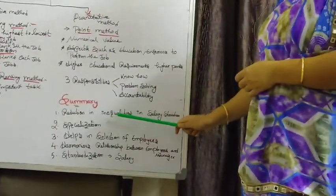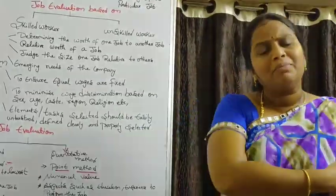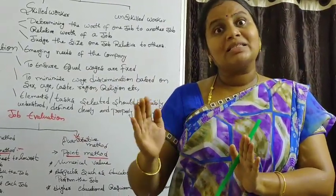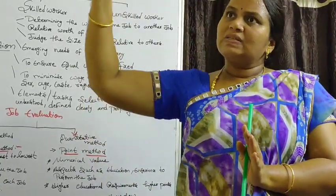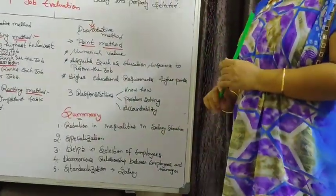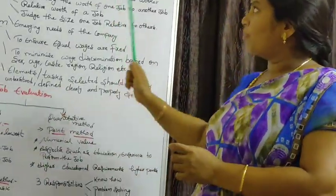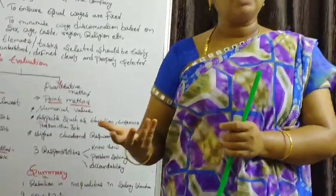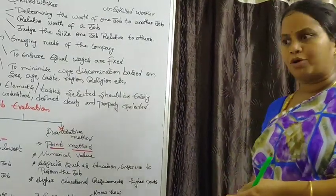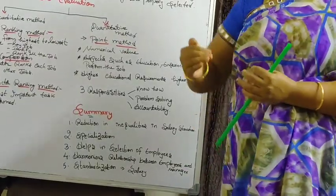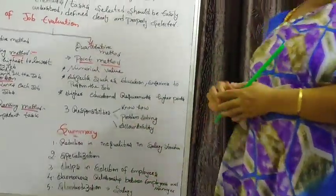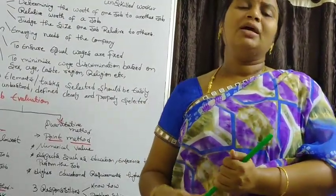Overall summary: job evaluation leads to a reduction in inequalities in salary structure. A worker can approach the employer asking why another worker is paid more — so salary variation must be clearly maintained by experience: 10 years gets this much, 5 years this much. It also promotes specialization according to experience and talent, helps in the selection of employees based on skill and ability, creates a harmonious relationship between employees and managers, and ensures standardization of salaries so the organization remains healthy and wealthy.